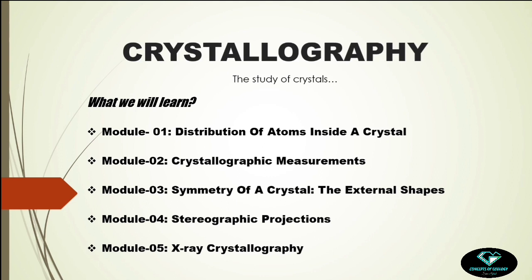Module 4 covers stereographic projections — the two-dimensional representation of a three-dimensional object. Here we will represent a three-dimensional crystal onto a plane of paper. Module 5 will be extra-crystallography, where we learn the principles of how we measure the tiny distances among atoms and how we decipher the internal symmetries inside a crystal.